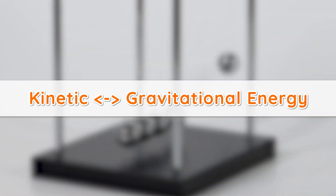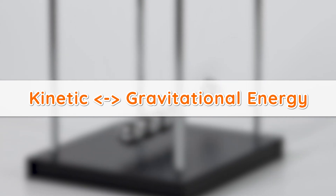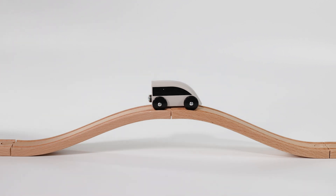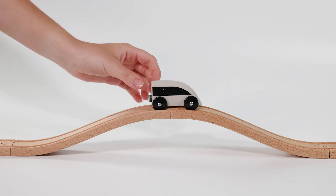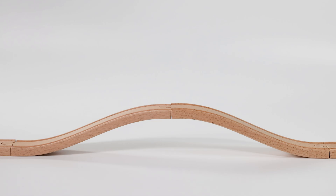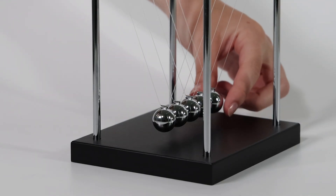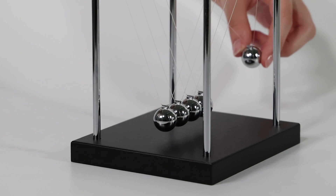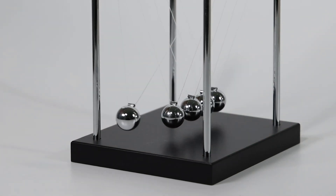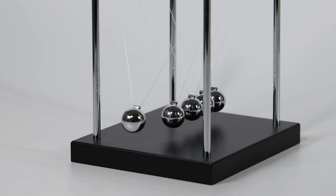Kinetic to gravitational potential energy and vice versa: pushing a car up a ramp stores kinetic energy as gravitational potential energy at the top. When the car is released, this potential energy converts back into kinetic energy as it speeds down. Another example is Newton's Cradle, which shows how energy transfers between objects, converting kinetic energy to potential energy and back as the balls swing back and forth. The motion of one ball transfers energy through the others, demonstrating continuous energy conversion.